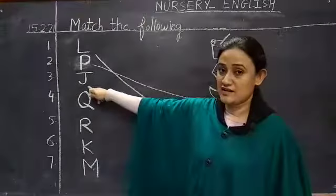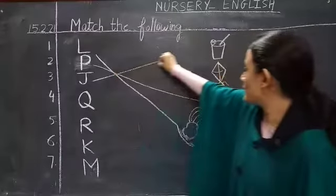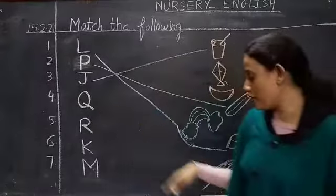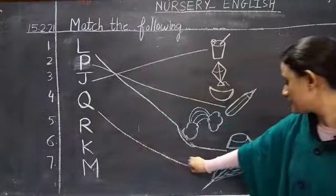Next is J. J is for juice, so J with the juice. Next is Q. Q for quill, so Q with quill.